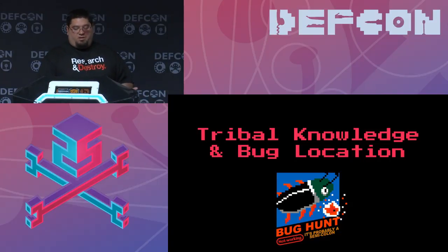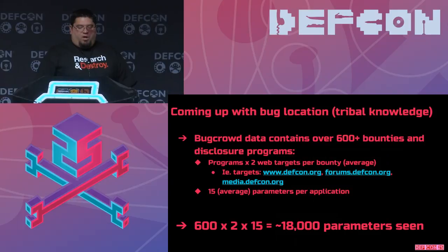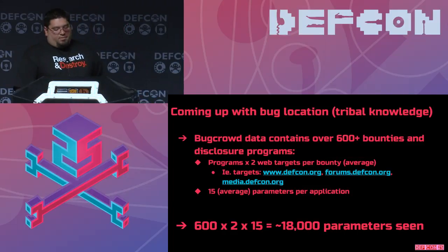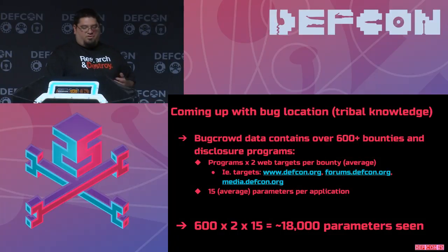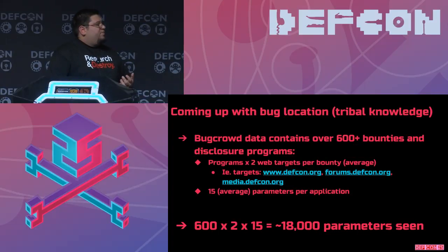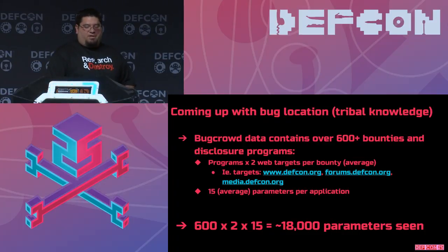Before we launch into what it looks like, you need to know how we gathered the data to make the alerts. We're Bugcrowd and we run over 600 bug bounty programs right now. Using some fuzzy math — programs times roughly two targets per application, where targets are subdomains or fully qualified domains — and averaging about 15 unique dynamic parameters per application, we came to about 18,000 parameters seen over the data set we were looking at.